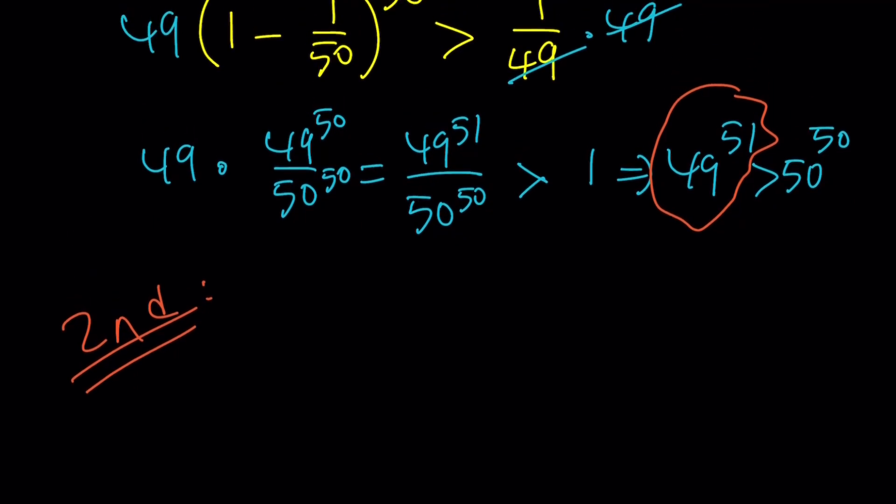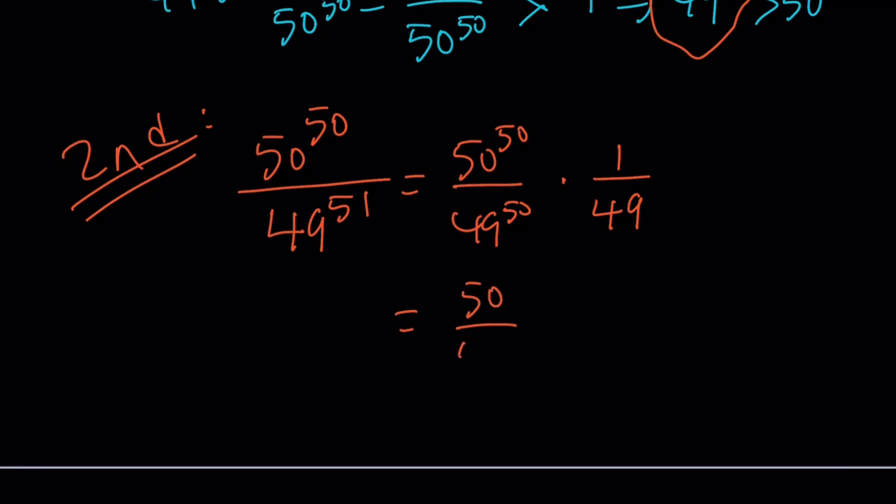For my second method, I'll reverse the numbers. This time I'm looking at the quotient 50 to the 50 divided by 49 to the power 51. We'll split up the same way: 50 to the 50, 49 to the 50, and then take one of the 49s out. Since it's in the denominator, it's going to be a fraction.